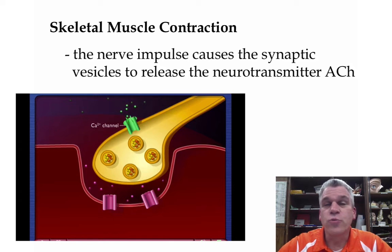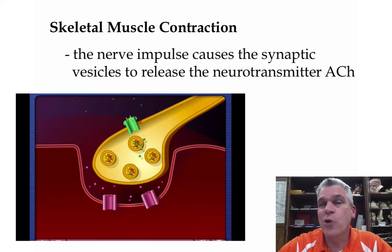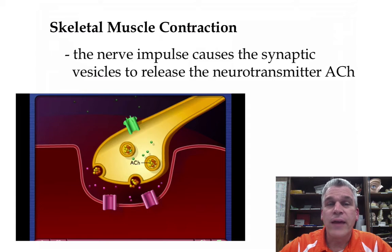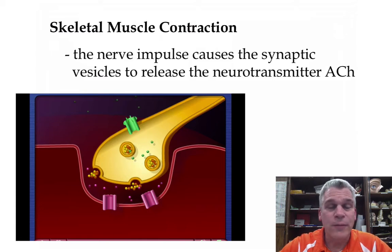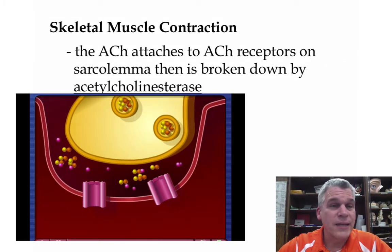When the nerve impulse reaches the synaptic vesicles at the end of the axon, a neurotransmitter called acetylcholine, or ACH, is going to be released. Remember that the neuron doesn't actually touch the muscle fiber at that neuromuscular junction, so the acetylcholine is what is going to jump that gap.